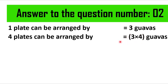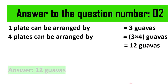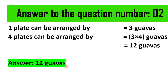In the next line we write: three into four is equal to twelve, and that is why the answer is twelve guavas. In the final line you should write that the answer is twelve guavas. I hope you all got the answer and understood the solution to question number two. These were very easy questions.